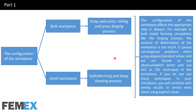In bulk metal forming simulations like the forging process, the amount of deformation of the workpiece is very large. This causes convergence problems when using the Abaqus standard solver, and we are forced to use the Abaqus explicit solver and use ALE or CEL techniques in the simulation. If you do not use these techniques, you will get wrong results or errors even when using the explicit solver.